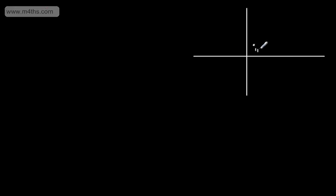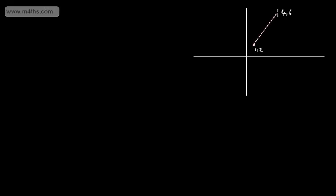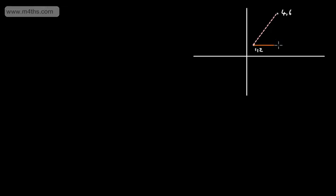Let's start off with 2D coordinates. If we have 2D coordinates, we have an x-coordinate and a y-coordinate. So let's say we've got some point here, and I'll say that point is going to be (1, 2), and then we've got another point at (4, 6). We can see that the change in the x-coordinate is going to be 3, and the change in the y-coordinate is going to be 4.